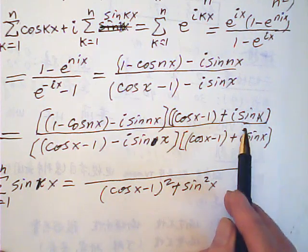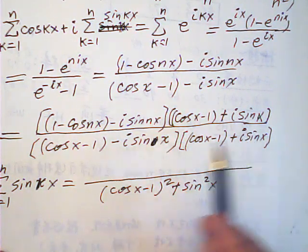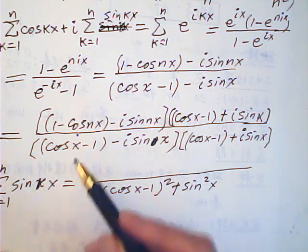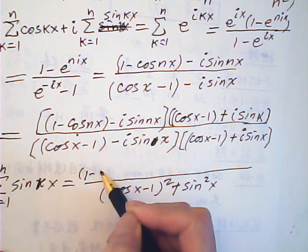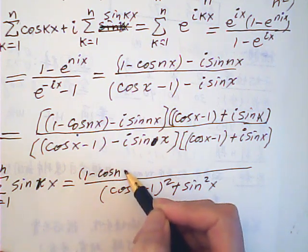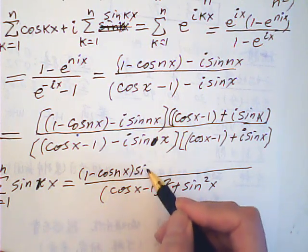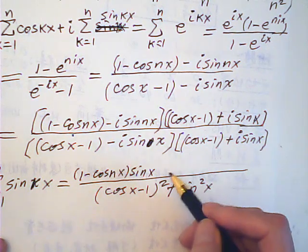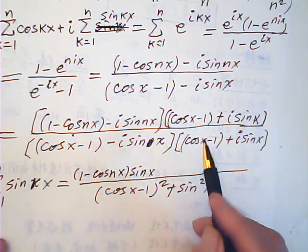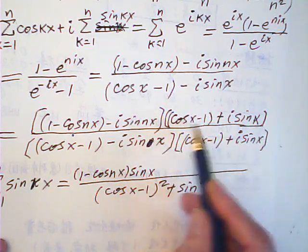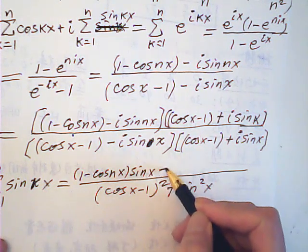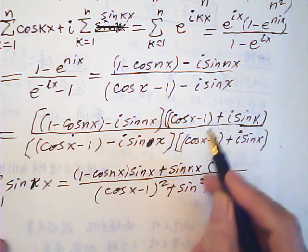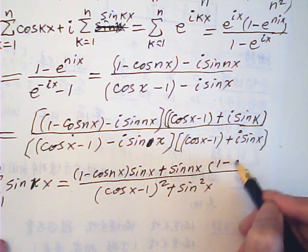Now for the numerator — only for the imaginary part. So that would be 1 minus cosine nx. Must be very careful — it's very easy to make a mistake. This term times that term is imaginary, and this term times this term is imaginary. So switching these two gives a negative times a negative, which is overall positive: sine nx times 1 minus cosine x.